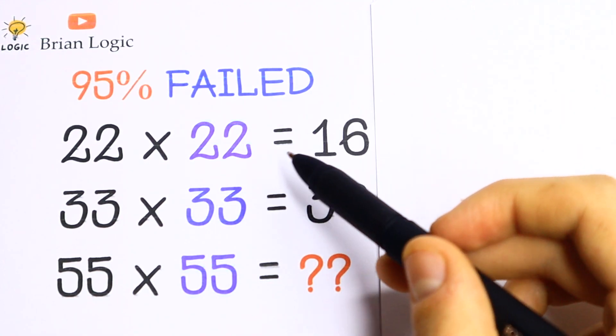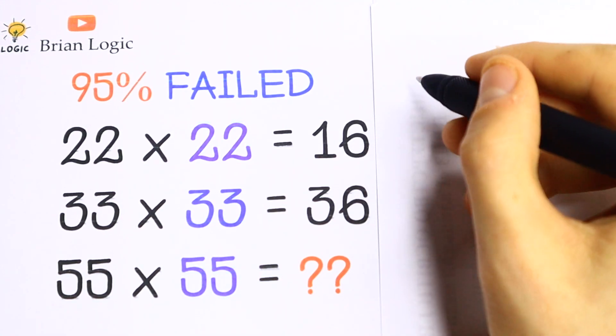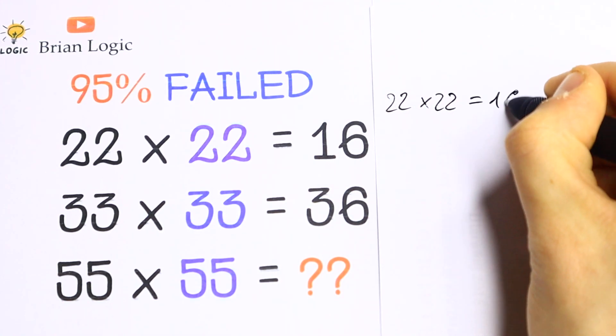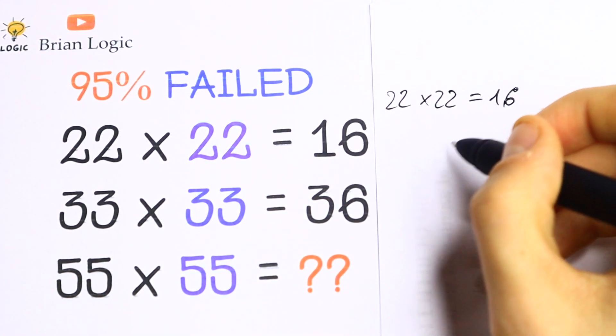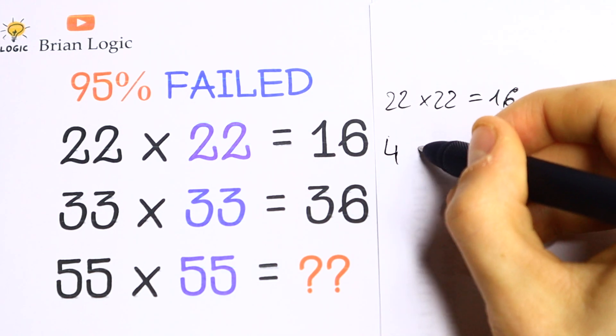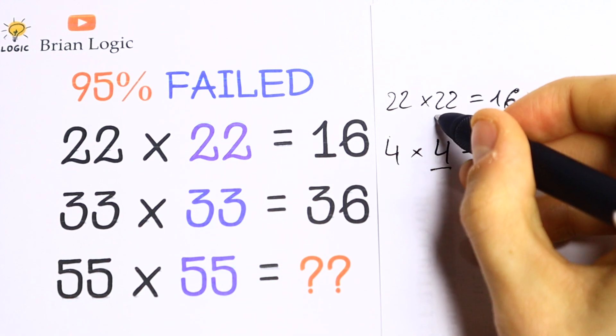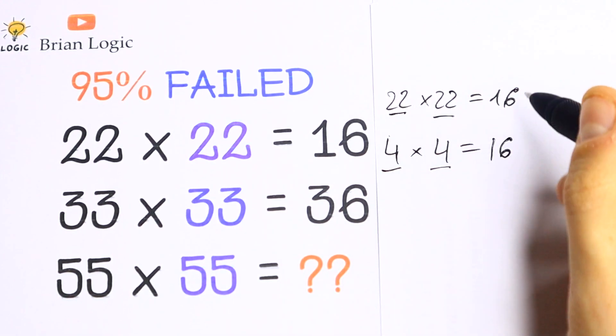So first of all, let's take a look at the first row. We have that 22 times 22 equals 16, but we know that 4 times 4 equals 16, and we have the first digit right here, and this one and this one are the same.